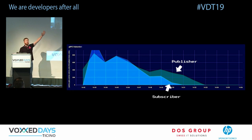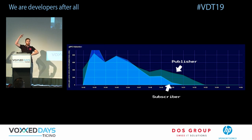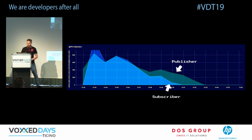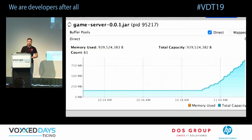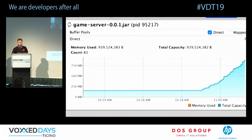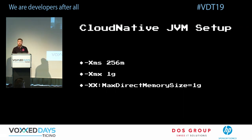At some point back pressure starts working, but there's a gap — the publisher overproduced some messages that the subscriber didn't consume. Where did those 20K messages go? This is a measurement of memory consumption — you can see a spike in out-of-heap memory, because gRPC is built on top of Netty.